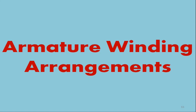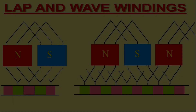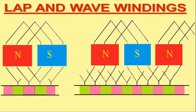Now, armature winding arrangement. Among several arrangements for making the end connections of the armature coils, generally two basic winding arrangements are most widely employed in DC machines: the first one is lap winding and the second one is wave winding.